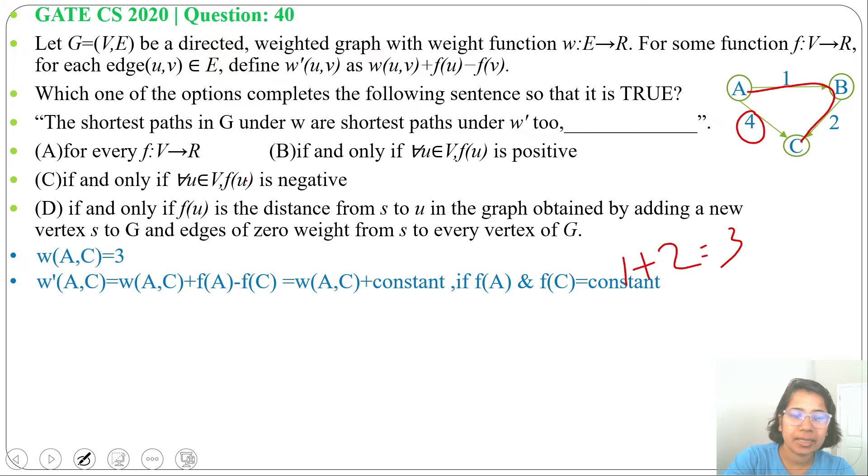Now W'(A,C) will be W(A,C) + F(A) - F(C). It's not given detail about F function, so let me assume F(A) and F(C) are some constant. So you can say W'(u,v) is a transformation of W(u,v).